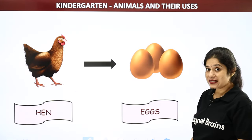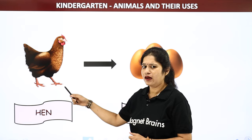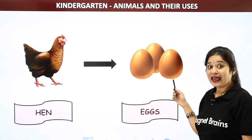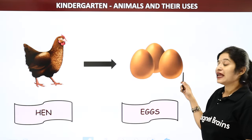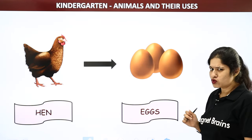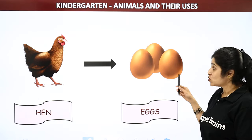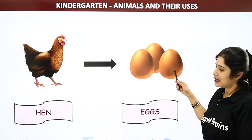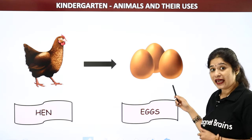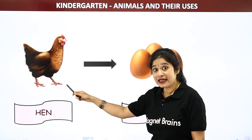The next animal is hen. What do we get from hen? Yes, we get eggs from hen. Mama used to make omelette in your breakfast — those omelettes are prepared from eggs. So children, how do we get eggs? We get eggs from hen.